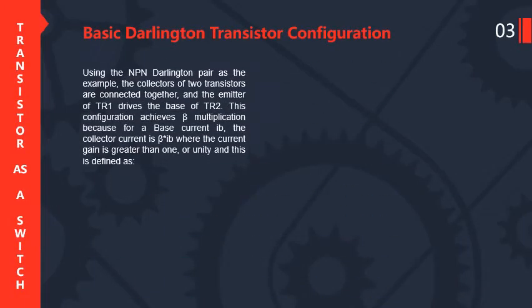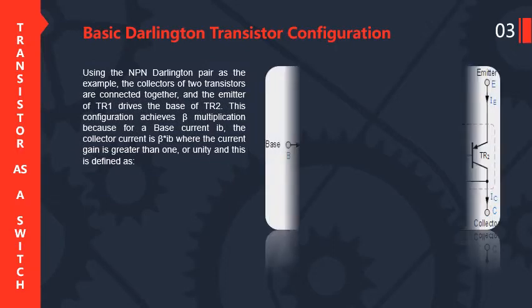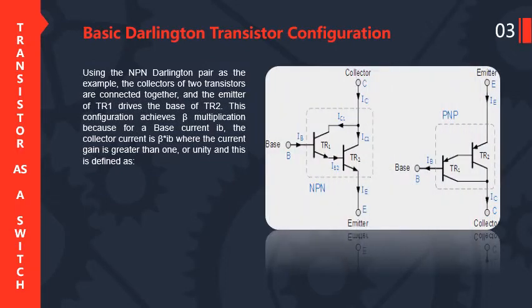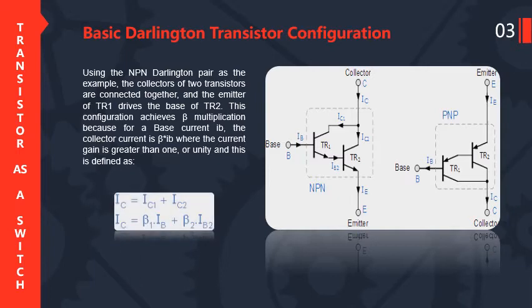Using the NPN Darlington pair as the example, the collectors of the two transistors are connected together and the emitter of TR1 drives the base of TR2. This configuration achieves beta multiplication because for the base current IB, the collector current is beta times IB, where the current gain is greater than unity. The total collector current IC is equal to IC1 plus IC2.